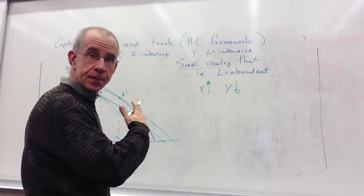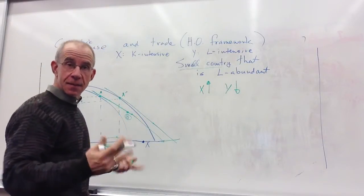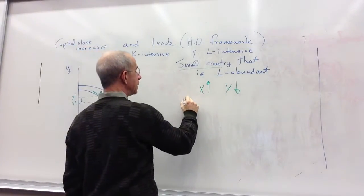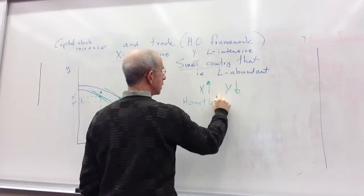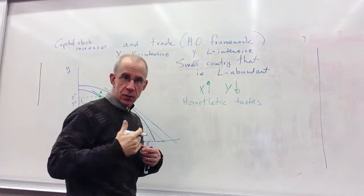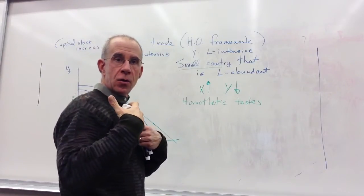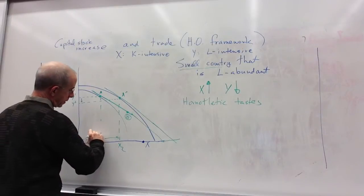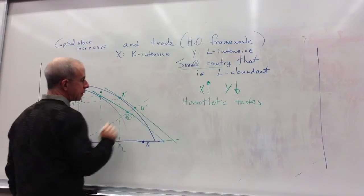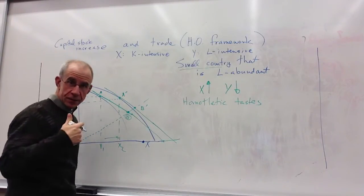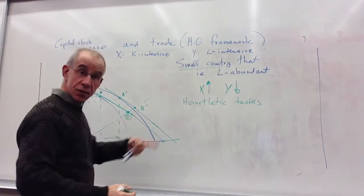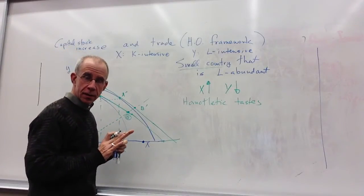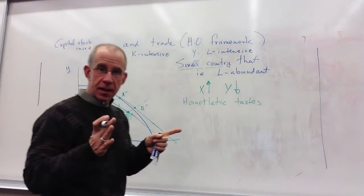In the Heckscher-Ohlin framework, we have homothetic tastes. If you increase income while keeping prices the same, you will increase the consumption of the two goods in the same proportion. So taking a line through point B at the same prices but with higher income, consumption increases proportionally for both goods. And what you see going on here is that the amount of trade that actually takes place gets smaller.